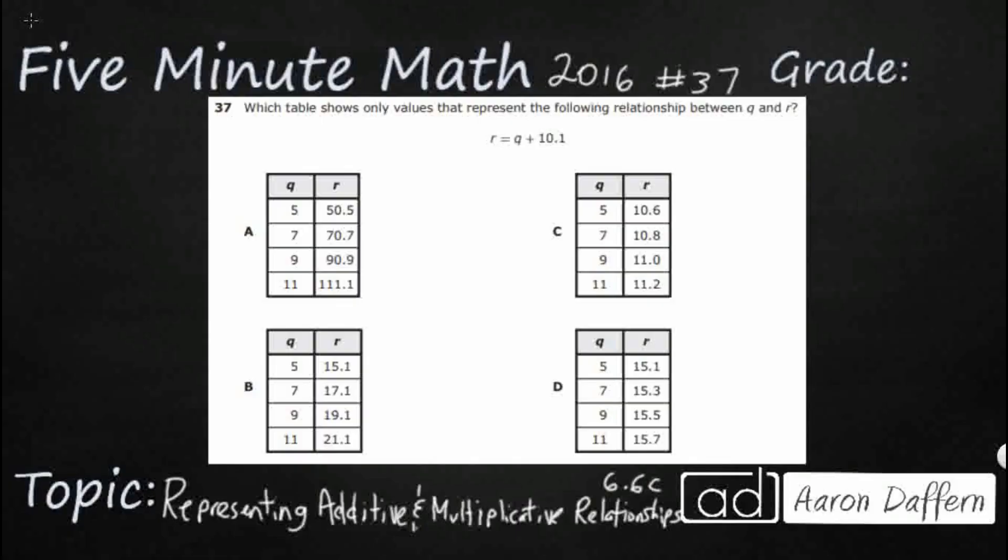So, we have four tables. We used to call these input-output tables, but now we use a little bit more advanced language. We actually have equations, and this happens to be an additive relationship. We are doing something to these variables because we are adding 10.1 or 10 and 1 tenths. So remember when we are looking at our variables q here, that is where we are starting. So that is our independent variable.